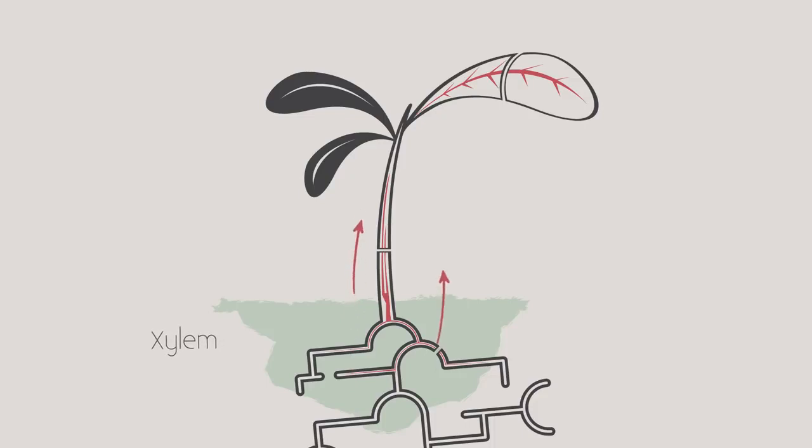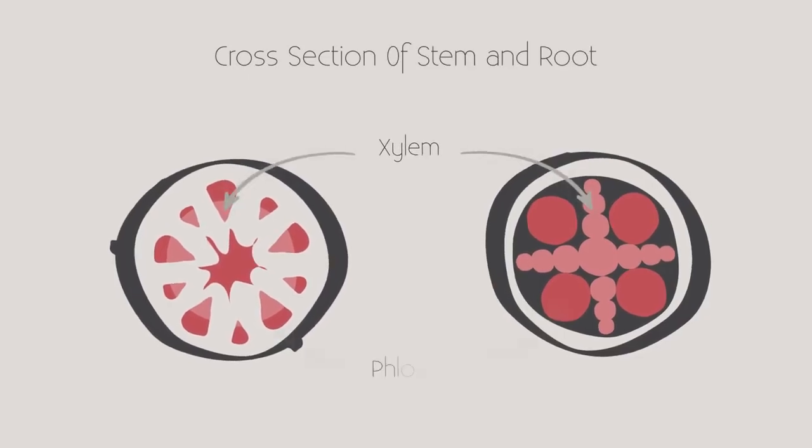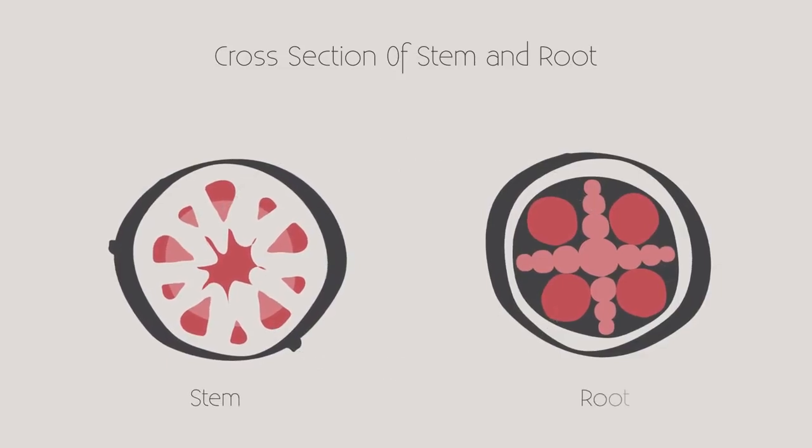They have a xylem which moves water and solutes from the roots to the leaves and a phloem which moves glucose made in the leaves by photosynthesis and amino acids to the rest of the plant. Here are the xylem and here are the phloem. Notice how the arrangement is different in the stem and the roots.